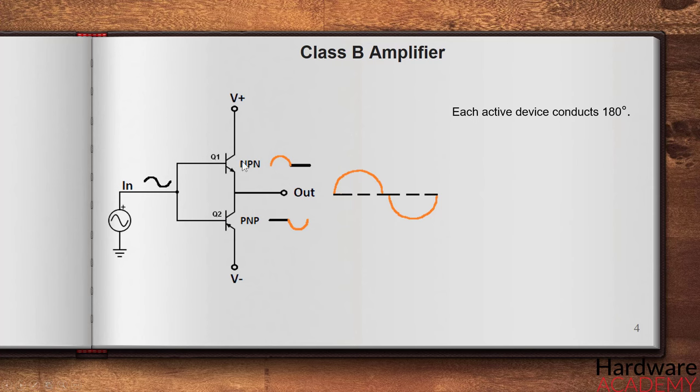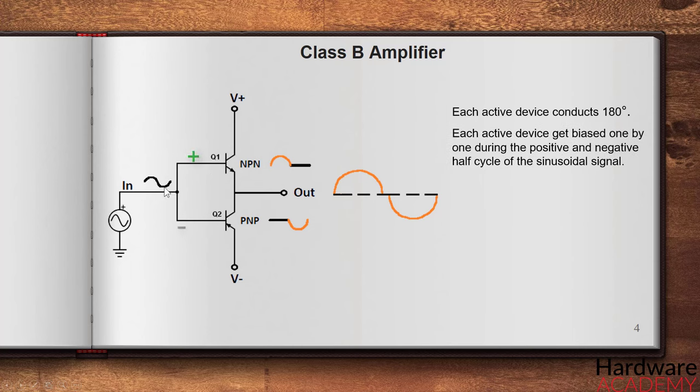This class B amplifier consists of two active devices which get biased one by one during the positive and negative half cycle of the sinusoidal wave, and due to this the signal gets pushed or pulled to the amplified level from both positive and negative side, and by combining the result we get complete cycle across the output. Because these two active devices are turned on one after another and because they conduct only half cycle, the efficiency gets improved.